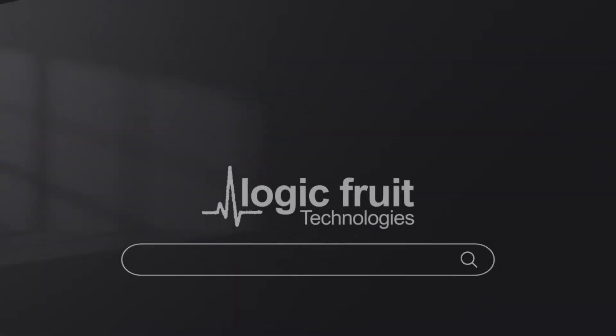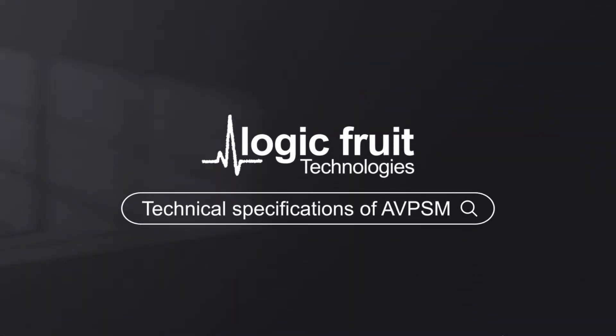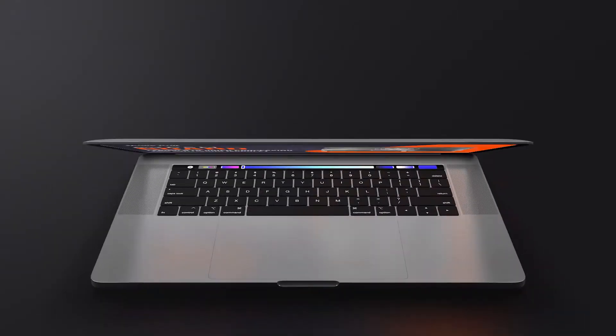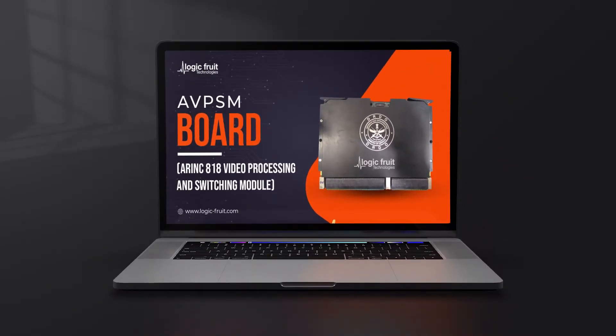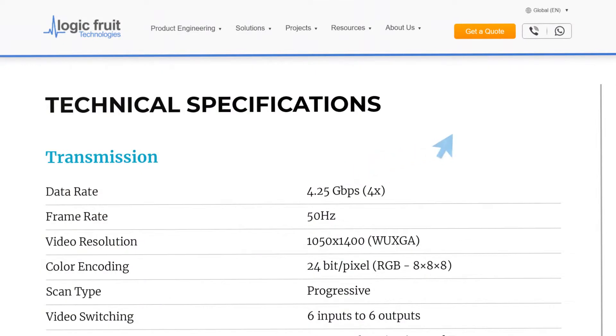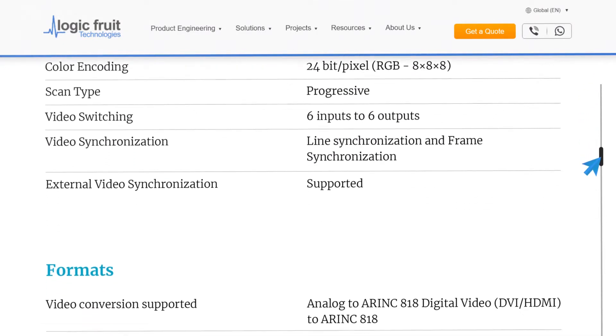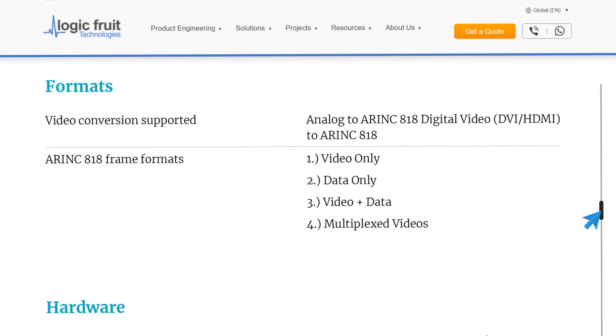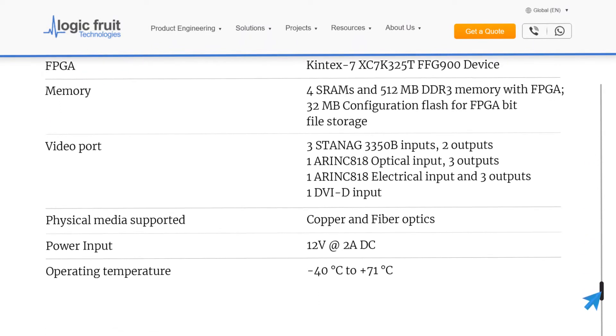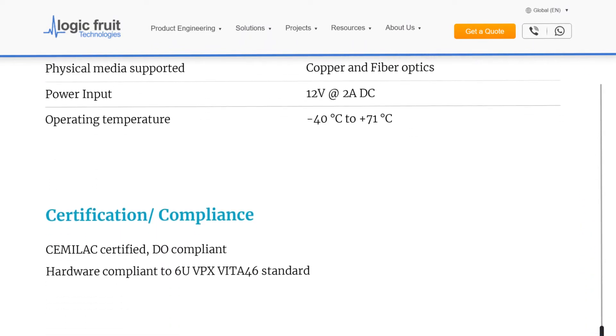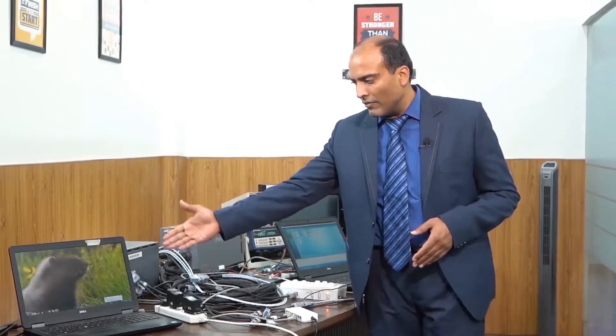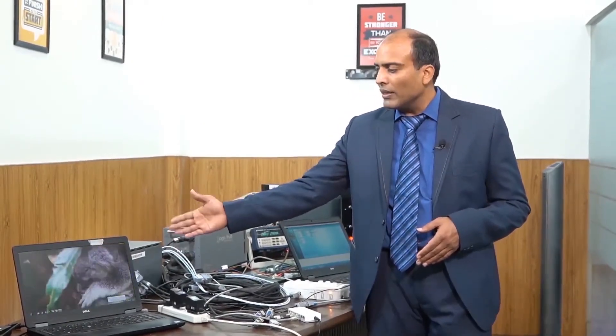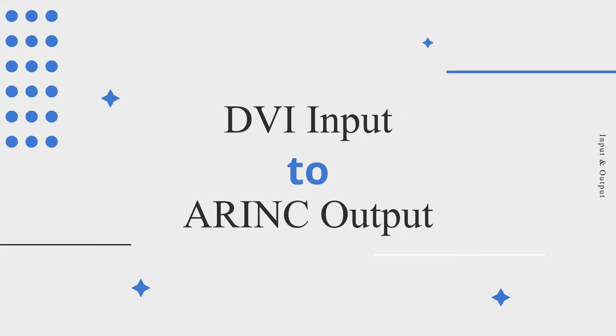This one is the video source from the laptop which is shown here. This video is passed to the system input through the DVI interface and output from this system is given out at airing output which is passed to the SMFD display which is shown here.